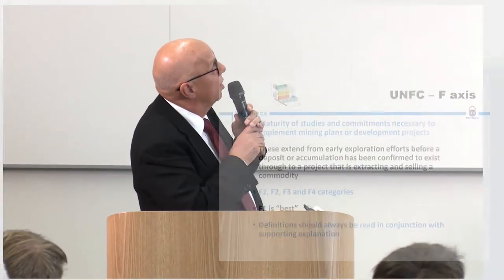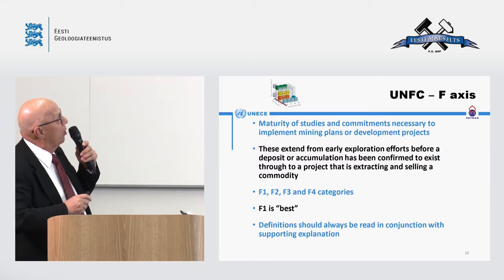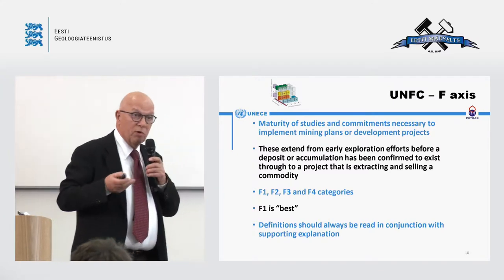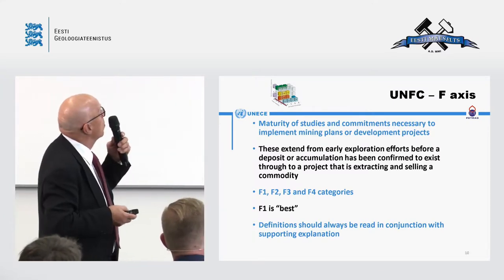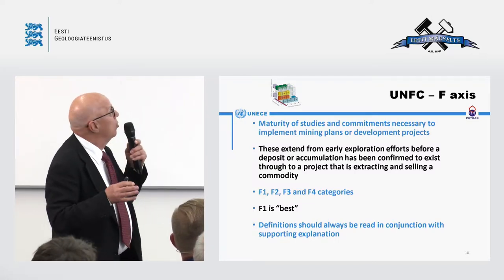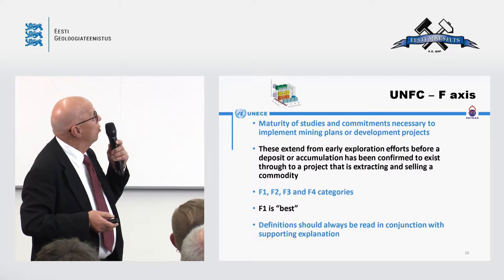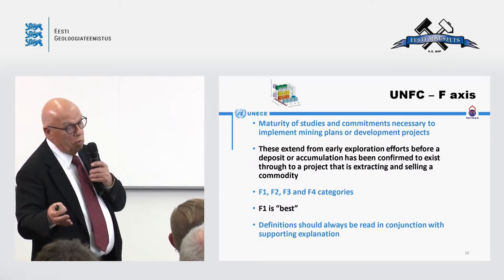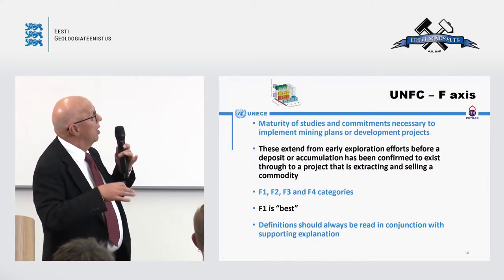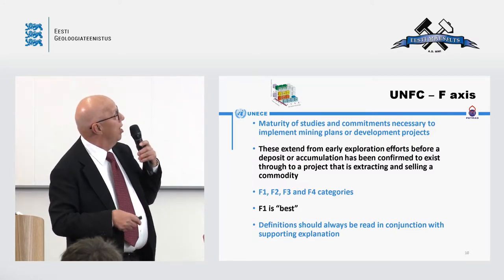The F-axis covers the maturity of studies and commitments necessary to implement mining plans and development projects. For minerals, this typically involves the pre-feasibility and feasibility phases. These considerations extend from the very early exploration efforts — before a deposit is discovered or accumulation has been confirmed — through to a project that is producing and finally being closed down. There are four categories, F1 to F4, where F1 is the best.